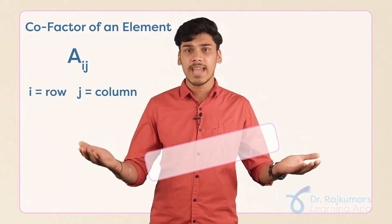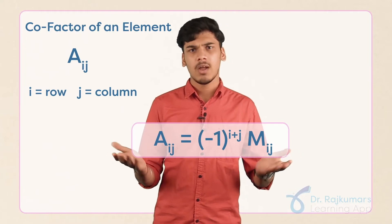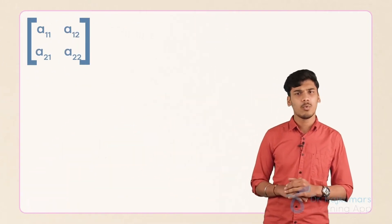Thus, Aij can be written as minus 1 power i plus j into Mij. Now let me take a matrix that is A11, A12, A21 and A22.